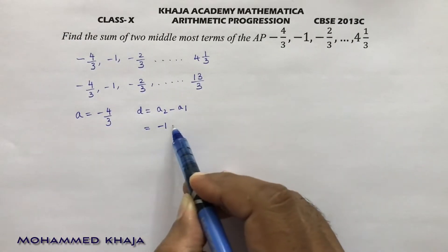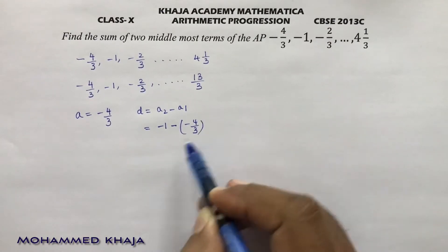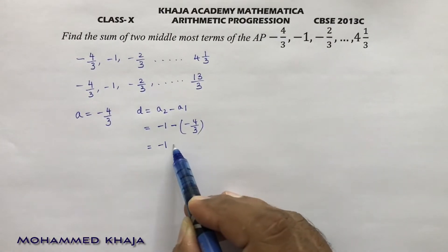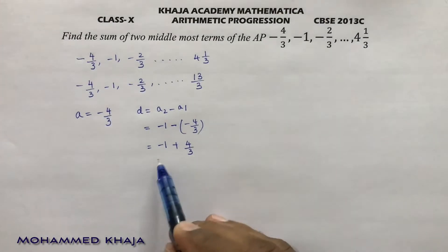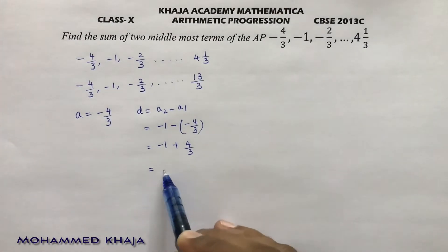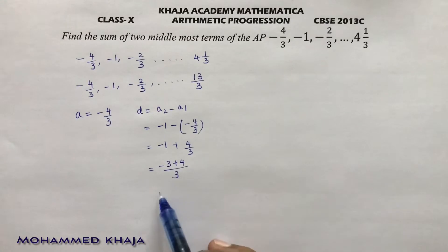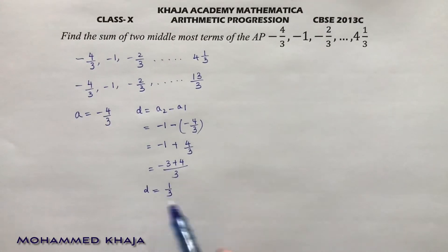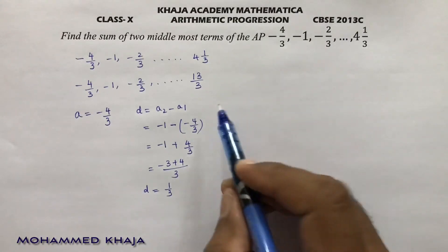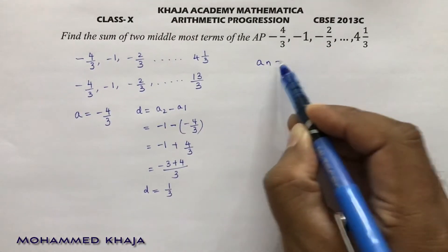A2 is minus 1, minus A1 which is minus 4 by 3: minus 1 minus of minus gives plus 4 by 3. Taking LCM as 3, that gives minus 3 plus 4, which is 1 by 3. So the common difference is 1 by 3. Now we find the number of terms using the nth term formula.